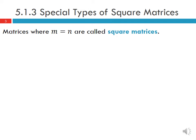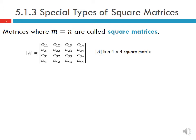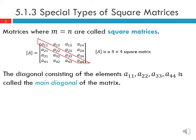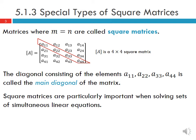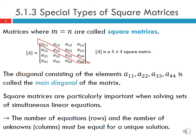A matrix where M equals N is called a square matrix, meaning the number of rows equals the number of columns. For example, this A is a 4 by 4 square matrix where M and N are both equal to 4. The diagonal consisting of elements A11, A22, A33, A44 is called the main diagonal. Square matrices are particularly important when solving simultaneous linear equations, since the number of equations and unknowns must be equal to determine a unique solution.